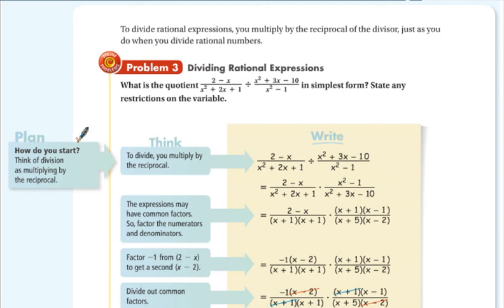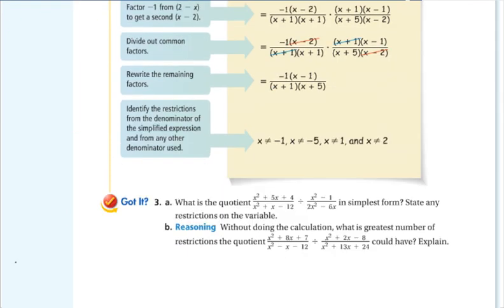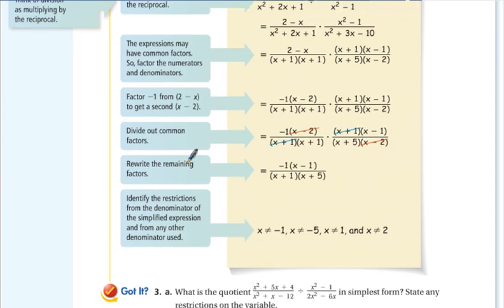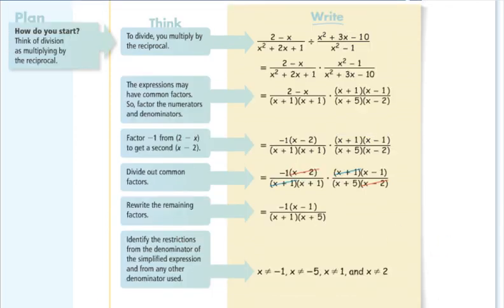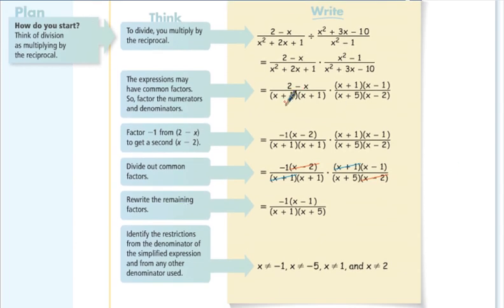To divide, there's simply one extra step. We have to remember that if I have one-fourth divided by one-third, that's the same as one-fourth times 3 over 1. We multiply by the reciprocal. So that's all we do here. We multiply and we flip this and then everything after that is the exact same. We want to make sure that we talk about rewriting the main factors. Identifying the restrictions from the denominator of the simplified expression and from any other denominator used. So I've got to account for all of them. So x can't be equal to negative 1, negative 5, or 2. But I also have to account for this denominator before I flipped it. That's where this 1 comes into play. If this were a 1, that would make this denominator 0 and then I'd be dividing by an undefined number. So I've got to account for every denominator used in the entire problem.